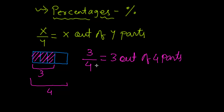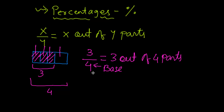Here, this is the base — the maximum quantity available. Suppose there are four chocolates: chocolate one, chocolate two, chocolate three, and chocolate four. Then we are talking about three out of four chocolates. So this is the maximum number of chocolates available.